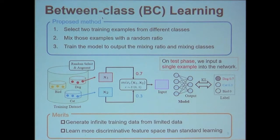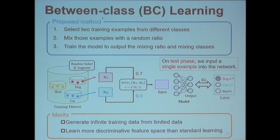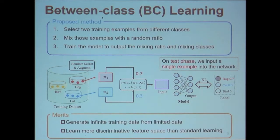Between-class learning is very simple but different from the standard learning method. One merit is that it generates infinite training data from limited data, which is very useful — we can train larger networks than with standard learning. Another merit is that it learns a more discriminative feature space than standard learning. I will explain the reason for this second merit later in my talk.